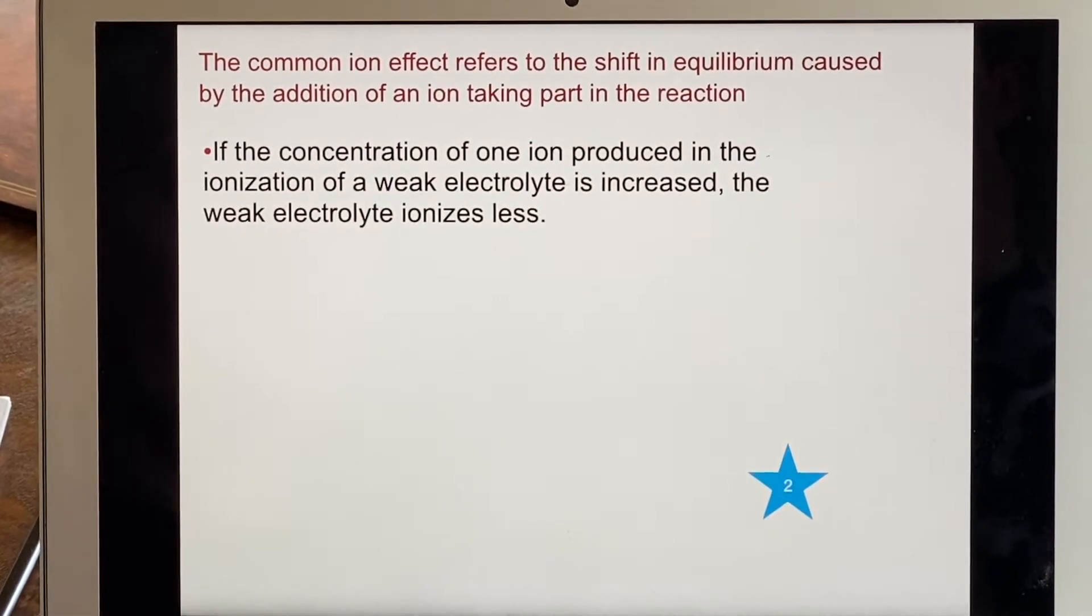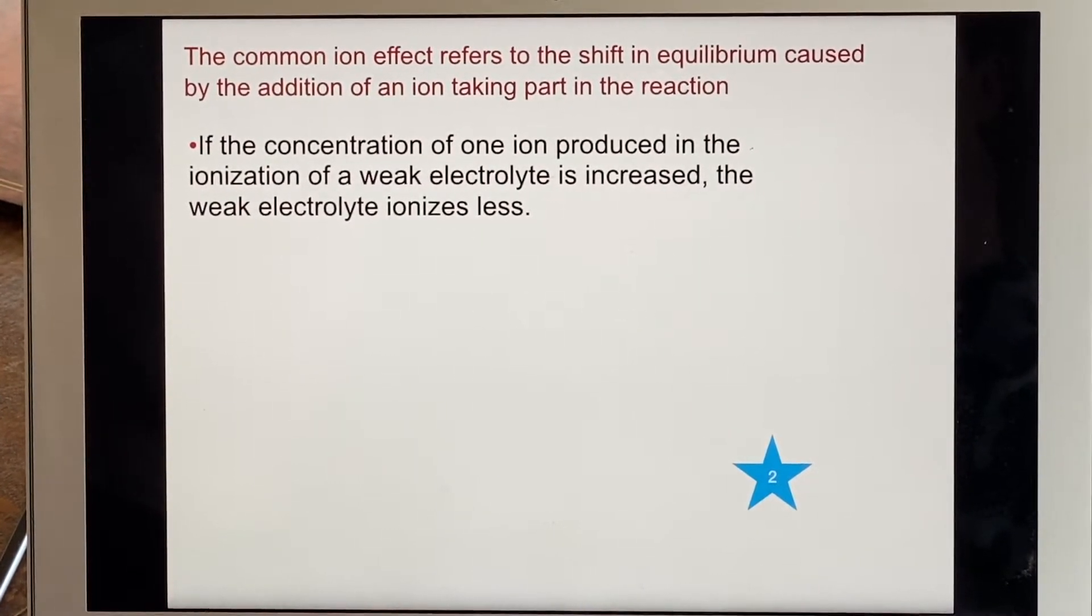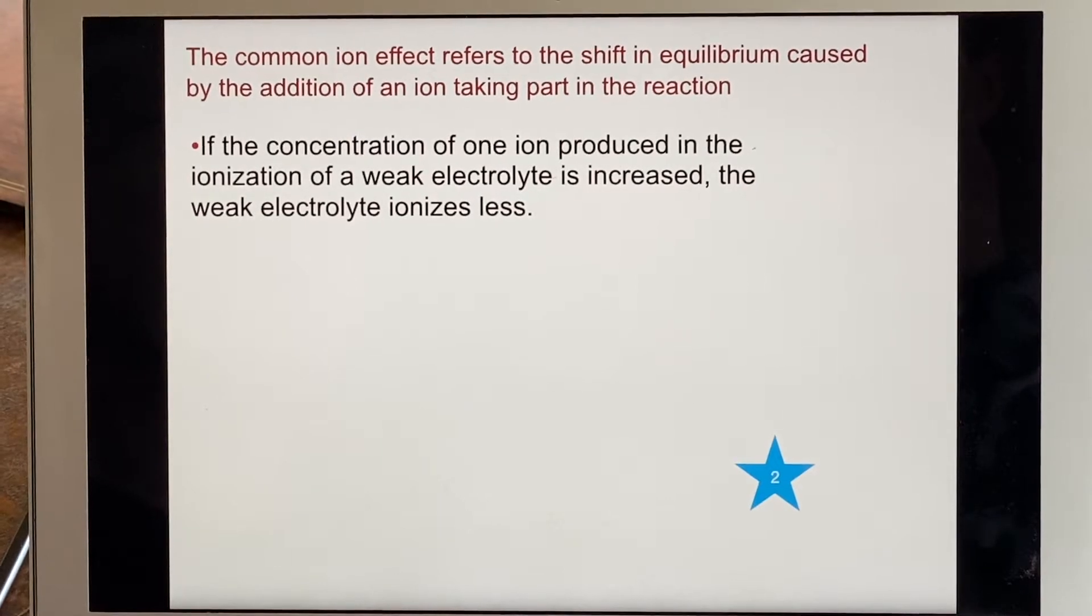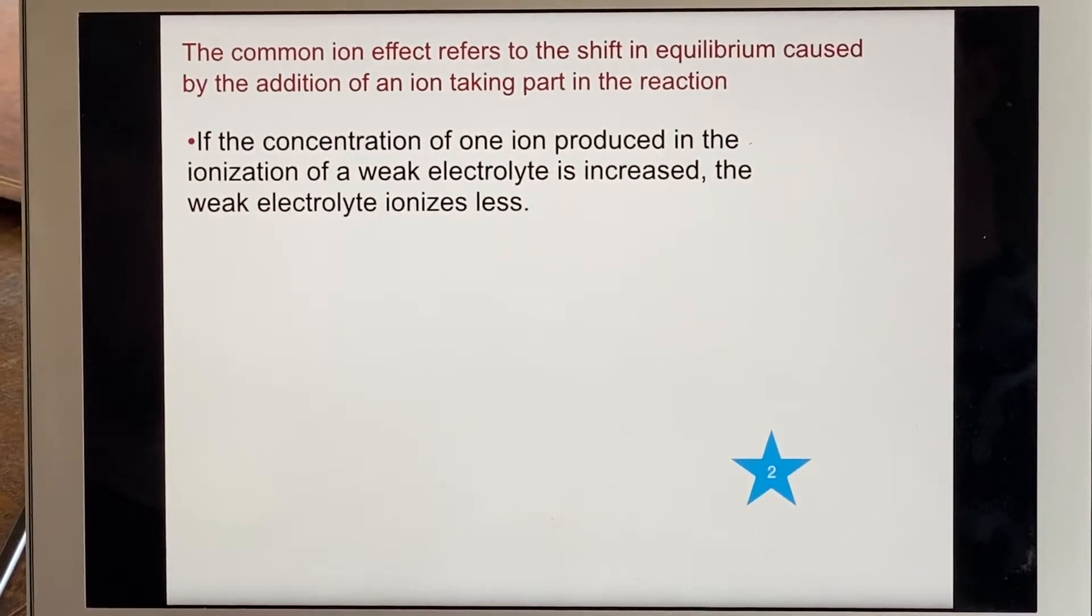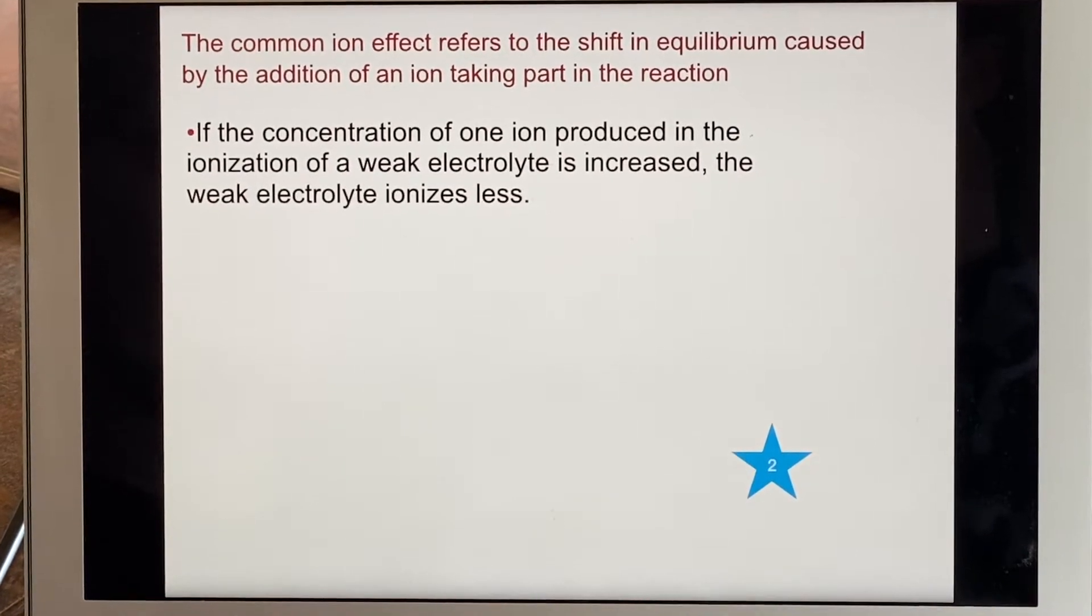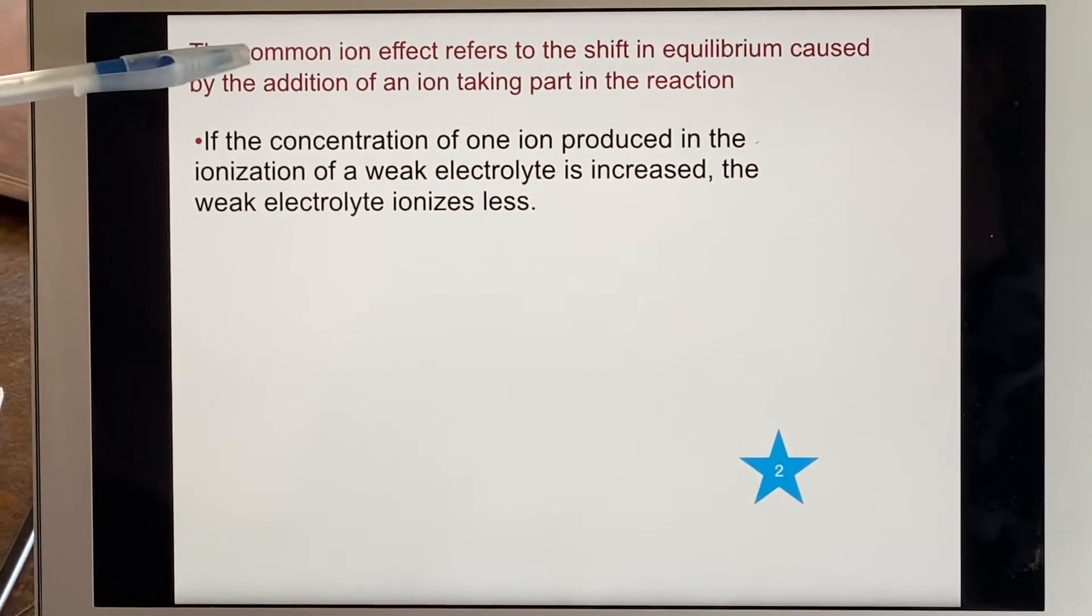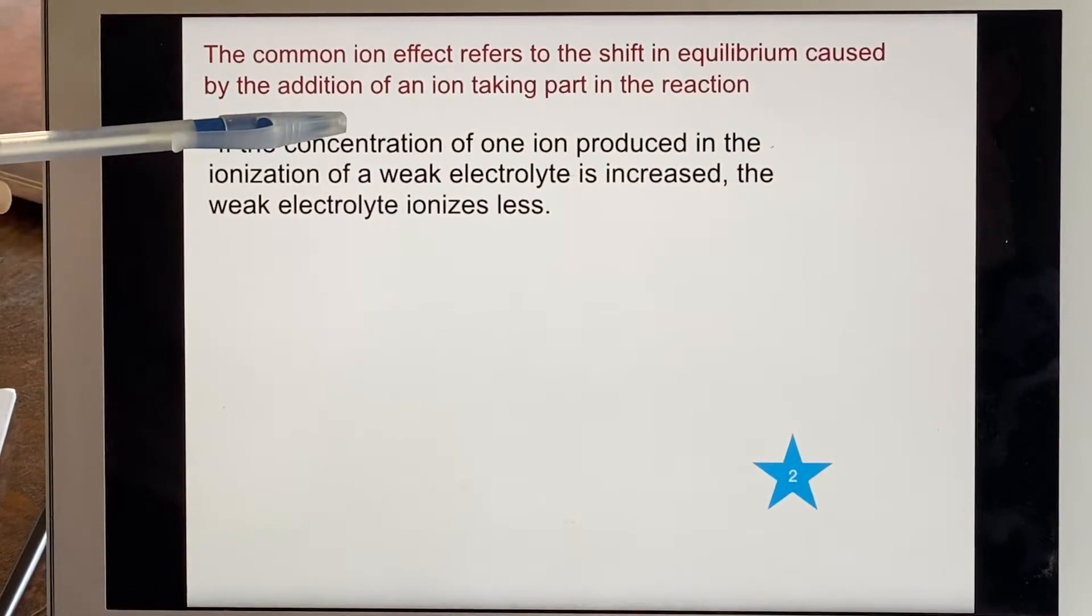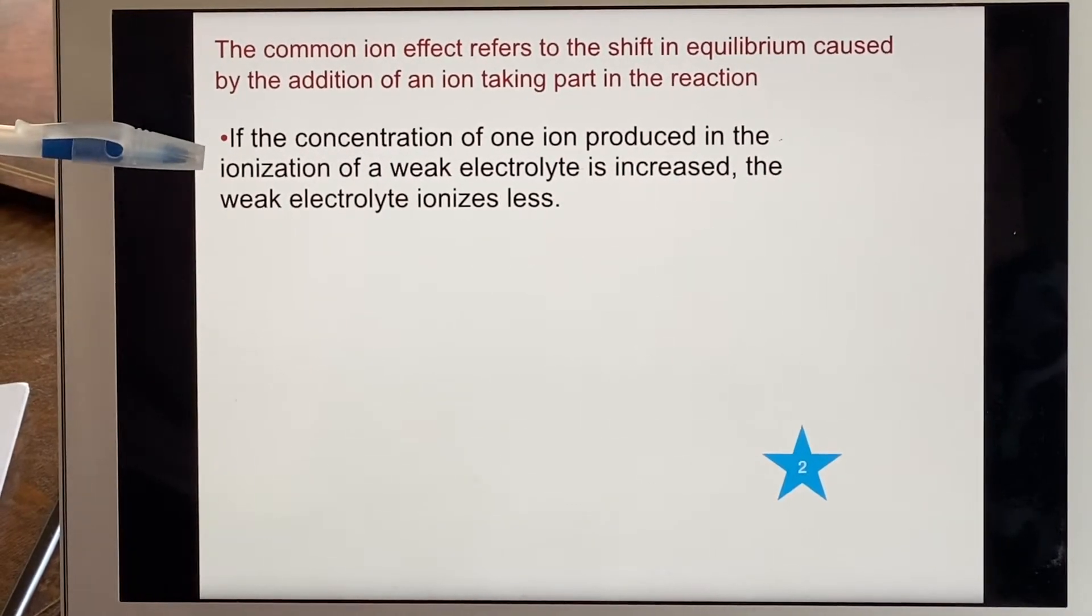The common ion effect: if you have an equilibrium and you put in one of the chemicals, you're going to have, according to Le Chatelier, a shift in the equilibrium. So if you're putting in an ion that already exists in there, if you're adding it, you're going to cause that shift and then you have to deal with it.